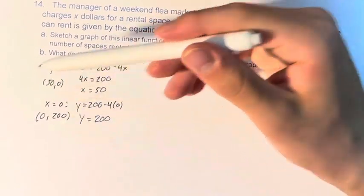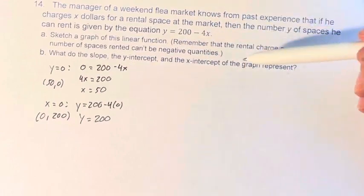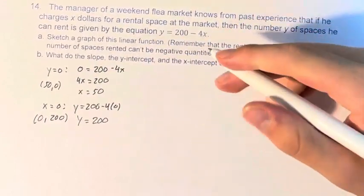And these are going to be the two endpoints of this line segment. It's not a line, it's a line segment because we can't be going into the negative values.